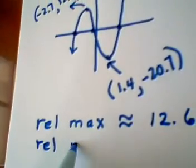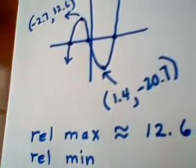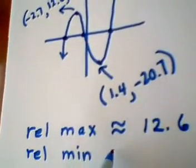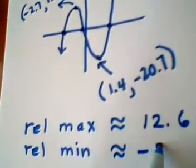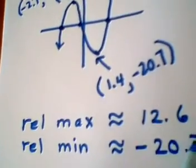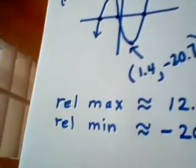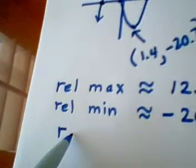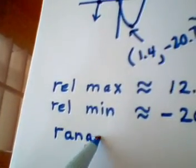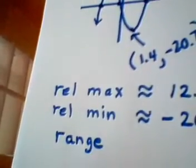The relative minimum is the y value at the bottom of the valley. That is approximately negative 20.7. The range of this function, which we were asked to give.